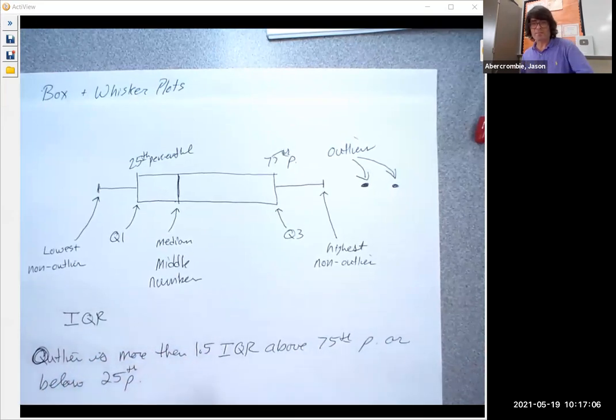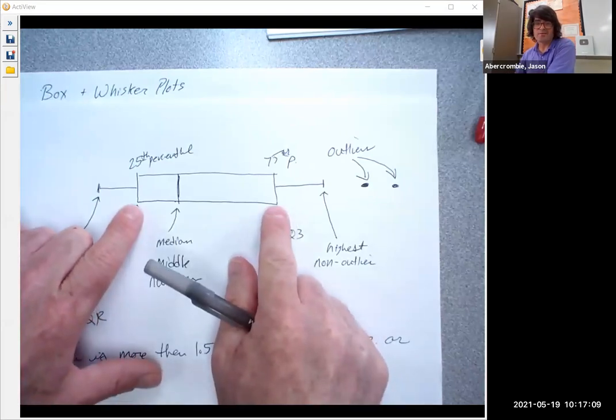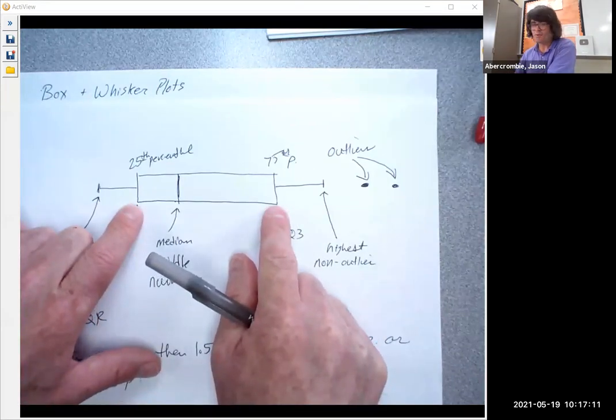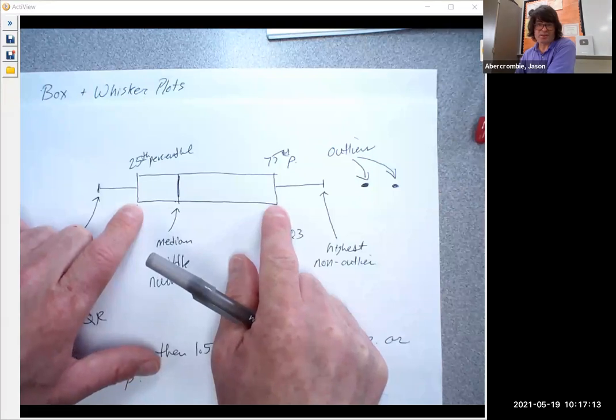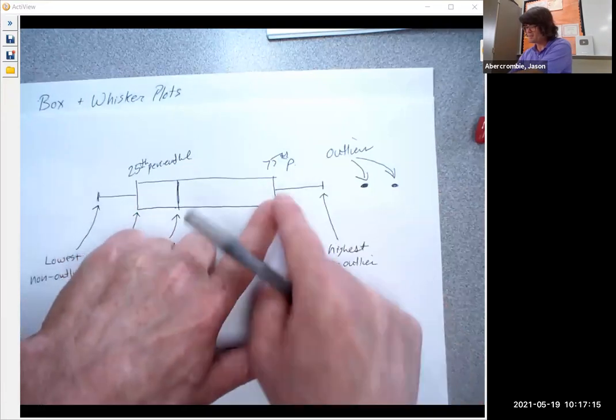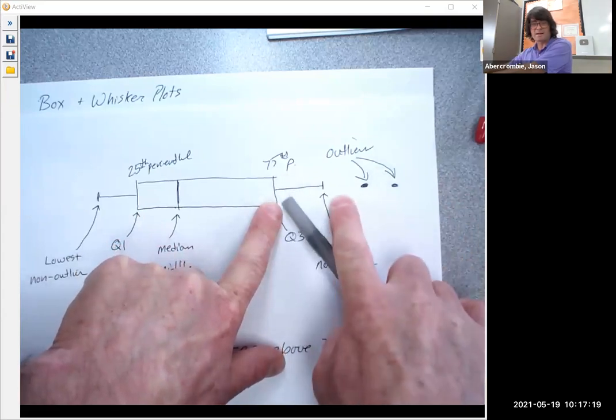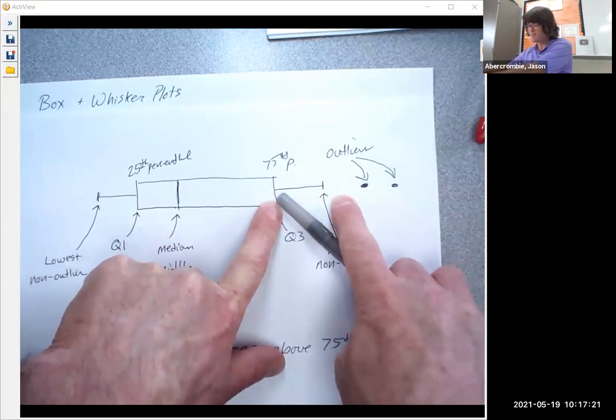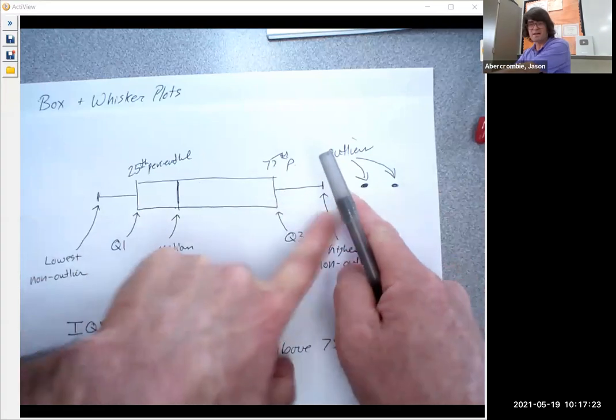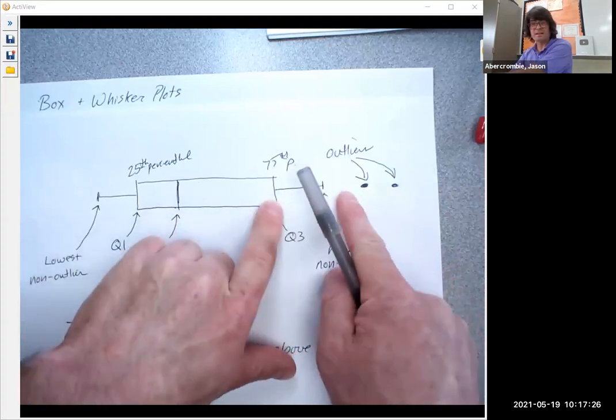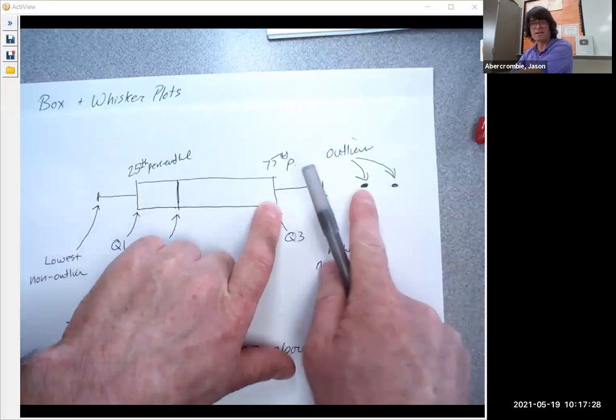So what that means, if you take, if say this span was 20, and you multiply it by 1.5 to get 30, and you add it to this number, that span kind of gives you the cutoff for what's an outlier versus what's not an outlier. So you take the highest number that's not an outlier and you make it the whisker, and then any numbers which are higher than that are dots.